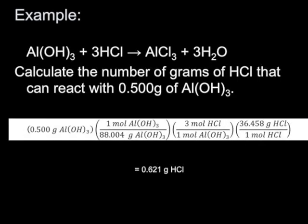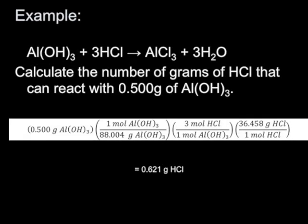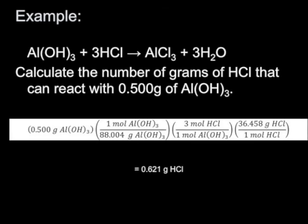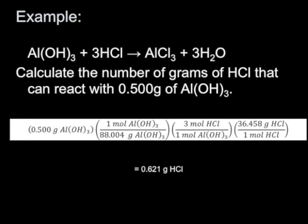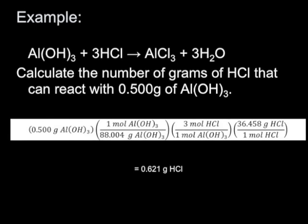0.5 grams of aluminum hydroxide times one over the molar mass, the 88.004, gives us moles. Use the molar ratio, go from moles of aluminum hydroxide to moles of HCl, so we're multiplying by three. And then we're going to convert back to grams to get the 36.58 grams. So 0.6121 grams of HCl is needed to react with 0.5 grams of aluminum hydroxide because of the molar ratio.